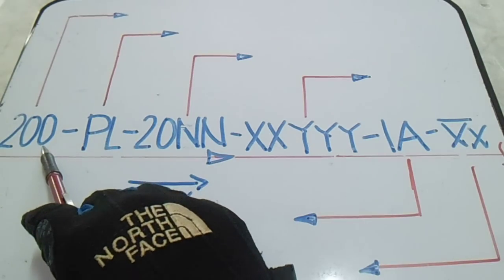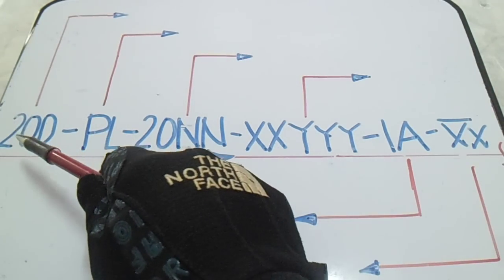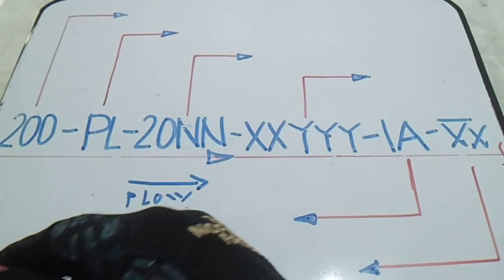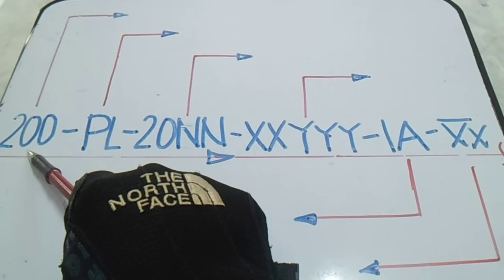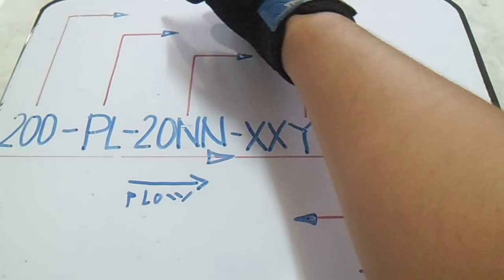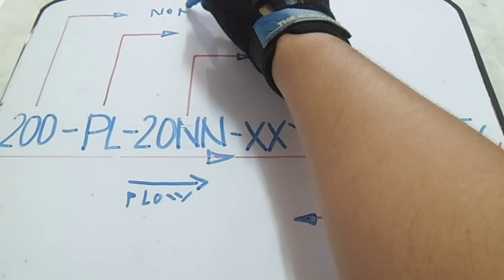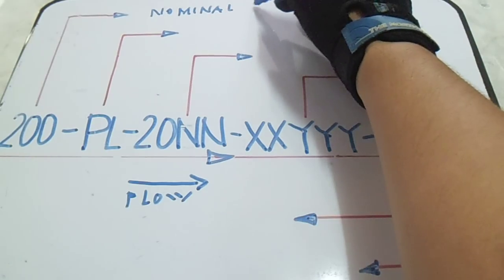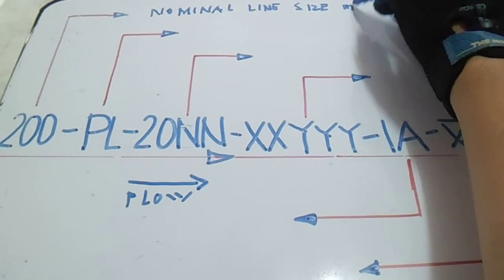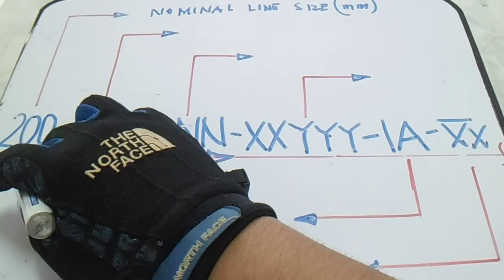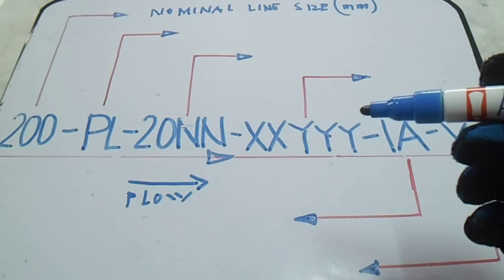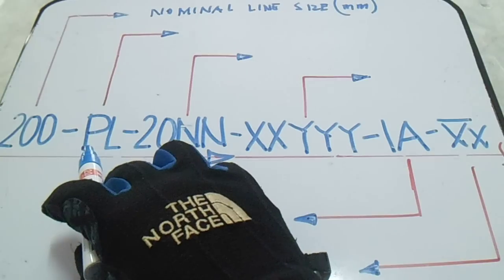This 200 — the meaning of this 200 is we have a line size. This is a nominal line size, and this is in millimeters. 200 is a size of 200 millimeters, which in inches is 8 inches, 8-inch diameter.